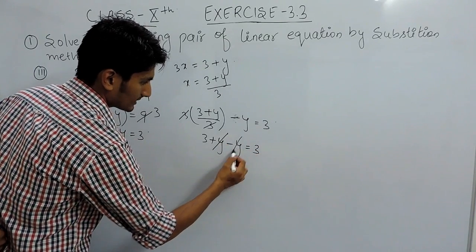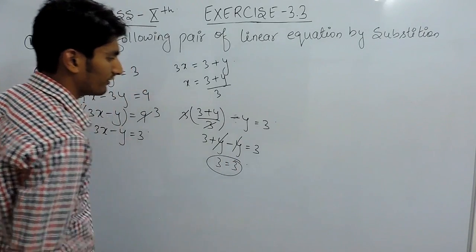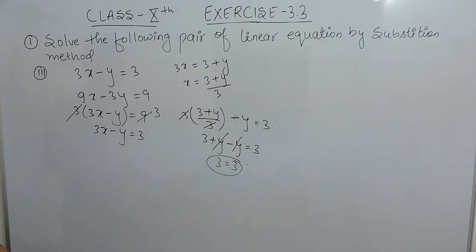So 3 can be cancelled by 3 so this is 3 plus y minus y equals to 3. This can be cancelled out and 3 equals to 3 so the value of y and x must be equal to 0 in this equation.